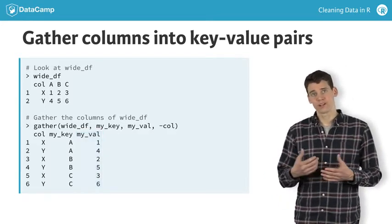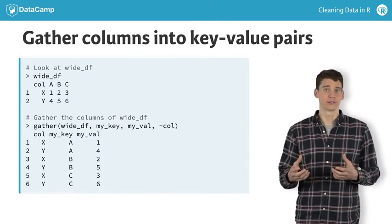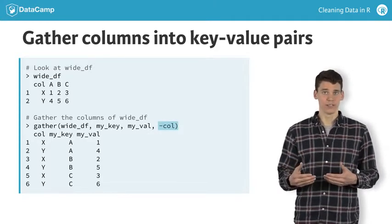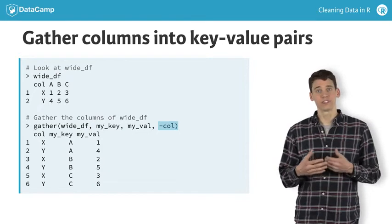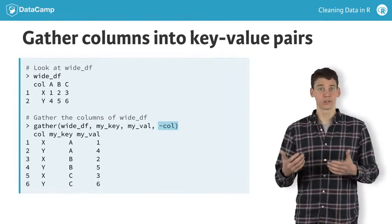We refer to this process as gathering the columns A, B, and C into key-value pairs. We use the minus call argument to make it clear that we want to gather all columns except for the first column labeled call.